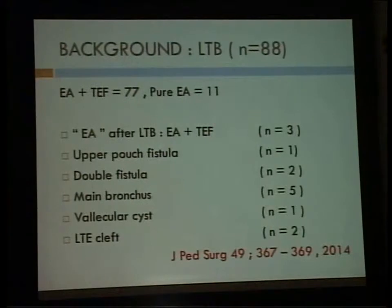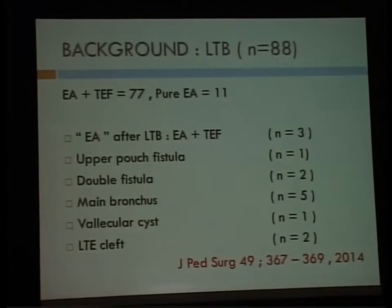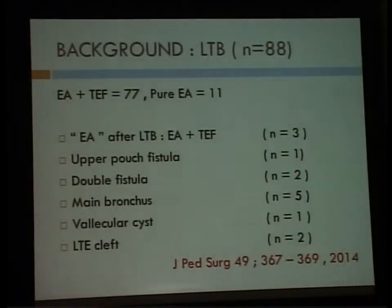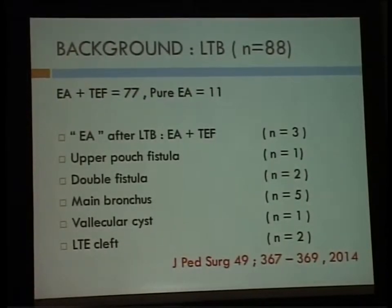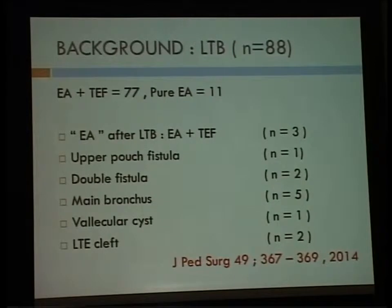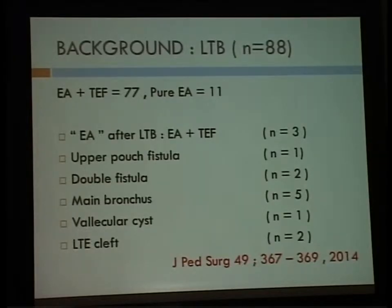We recently published a case series of 88 patients of tracheoesophageal fistula where we highlighted the importance of a preoperative laryngotracheobronchoscopy. In this study we found that three of our patients who were preoperatively diagnosed to have esophageal atresia — because the x-ray did not show gas in the abdomen — were found to have a fistula after bronchoscopy. Similarly we found an upper pouch fistula, double fistula, a fistula connecting to the main bronchus, a vallecular cyst, and laryngotracheal clefts in some patients.